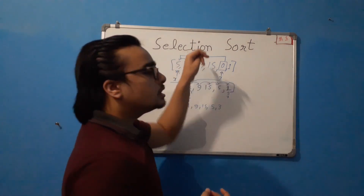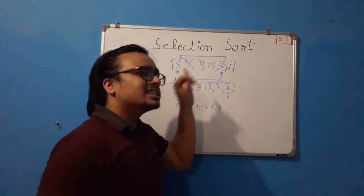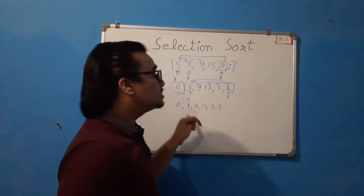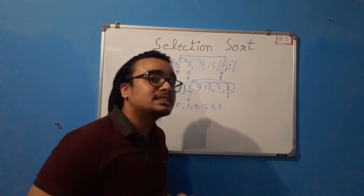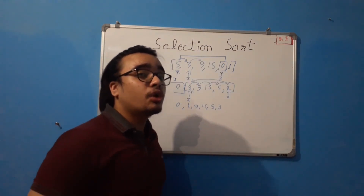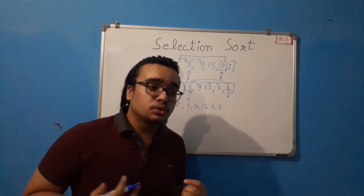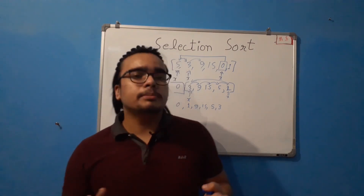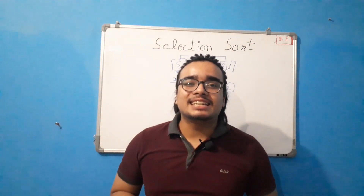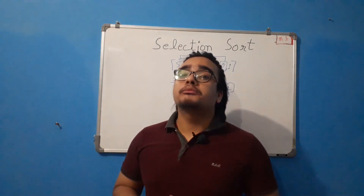The name only suggests how this will work: 'selection' means we have to select the smallest number in the list or array. So that was the theory part. Now let's go to the laptop and see how we can create a Python program for the same.